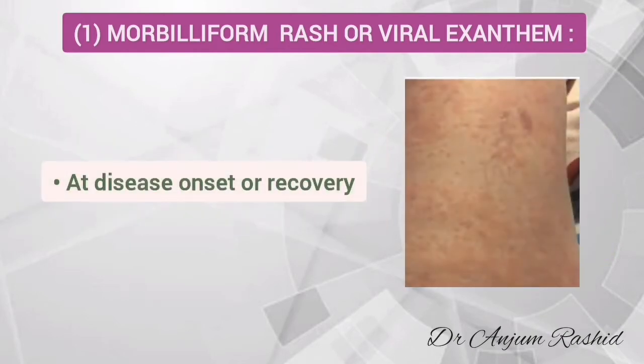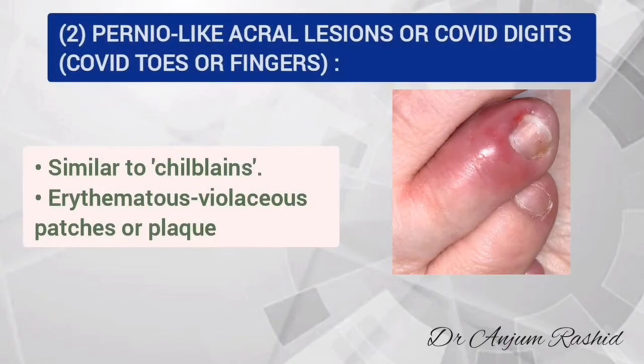Histopathological findings of morbidiform rash consist of superficial perivascular lymphocytic or neutrophilic infiltrate. This rash has been noted either at disease onset or, more frequently, after hospital discharge or recovery.